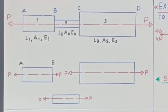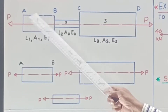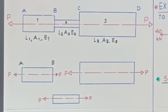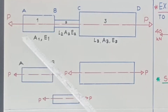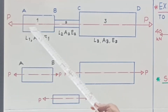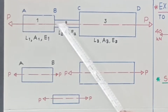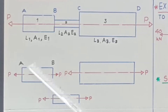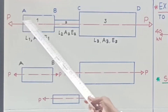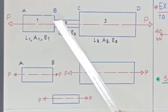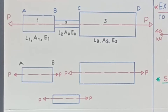You can see here A, B, C, D is a bar of varying cross-section. The cross-sectional area of AB is different, BC is different, and CD is different. Let us say this is part number 1, part number 2, and part number 3.